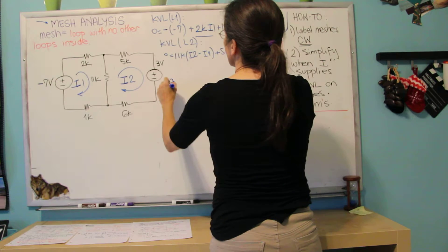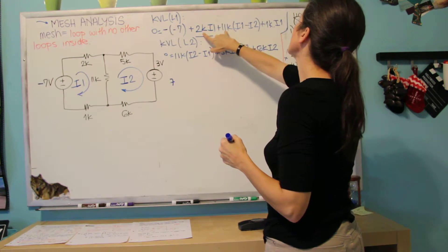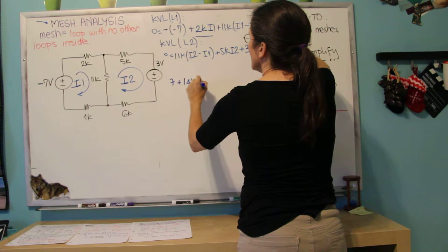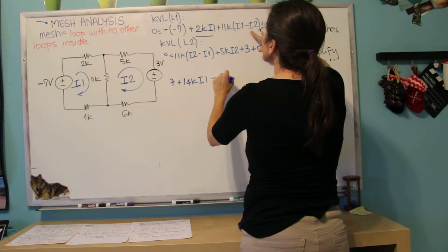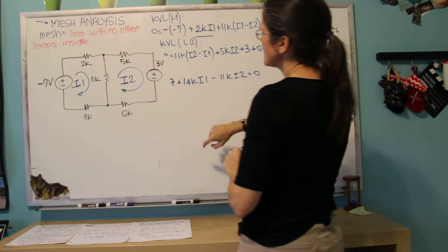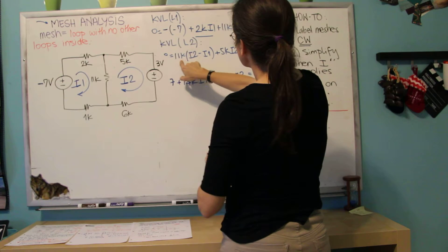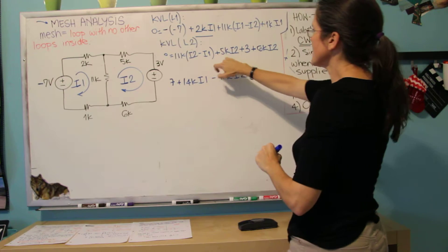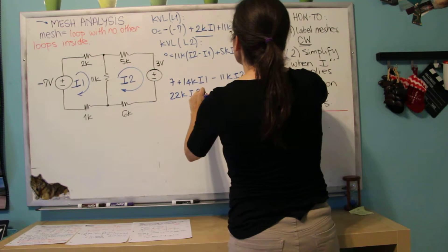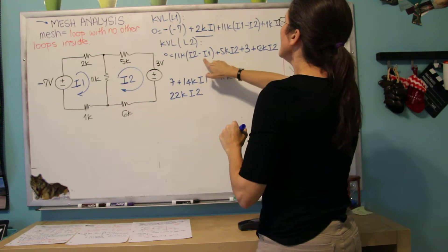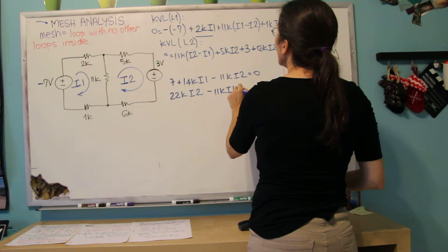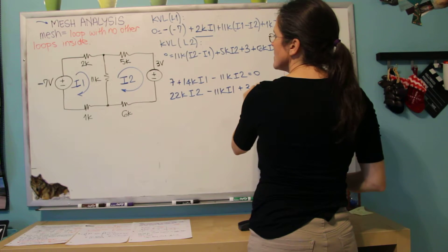So 7, and this is 2K plus 11 is 13, plus 1 is 14. I1 minus 11K I1 minus 11K I2, and this one is 11 plus 5 is 16, plus 6 is 22K I2, minus 11K I1 plus 3 equals 0.